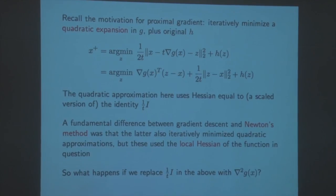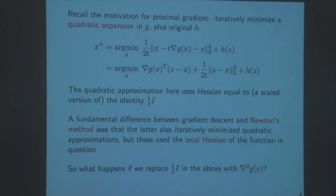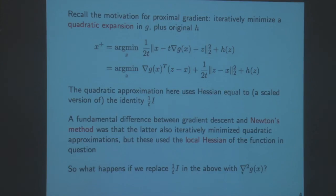Proximal gradient minimizes at every step a quadratic expansion of G plus H - where because H isn't smooth we don't expand it, just make a quadratic expansion of G. In that expansion, the Hessian is replaced by a multiple of the identity. The key difference between Newton and gradient descent was that Newton used the Hessian rather than a scaled identity for the quadratic approximation. Proximal Newton does the analogous thing in the proximal world: replace the scaled identity with the Hessian of G.